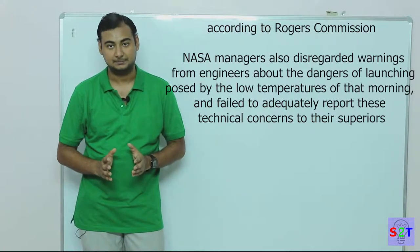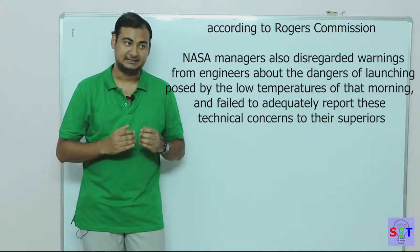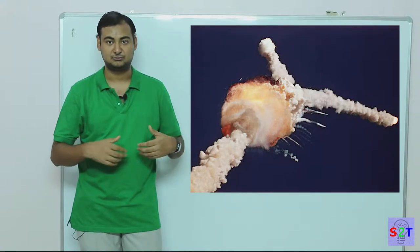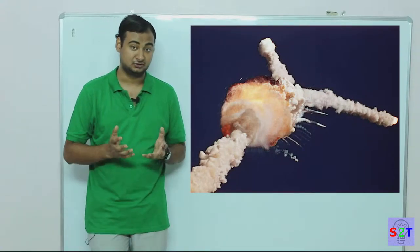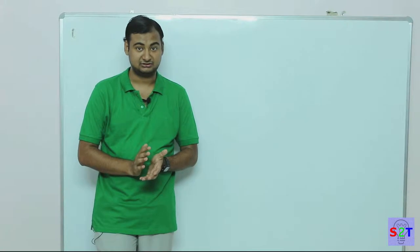They received a phone call that the solid booster would blow up if they fired it, and they still launched it. And kaboom - they knowingly killed seven people in the first shuttle disaster. Suffice to say, they have blood on their hands.